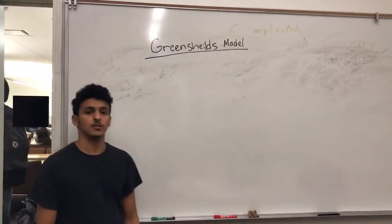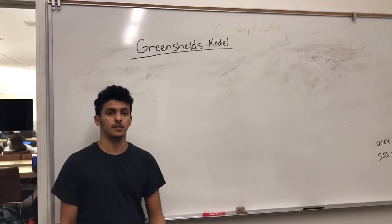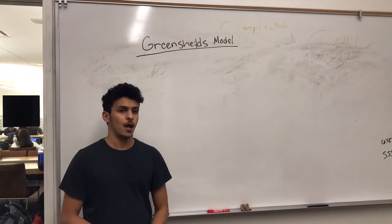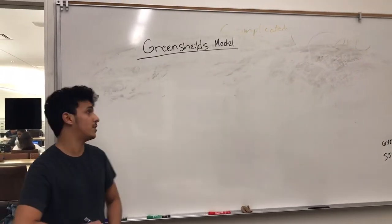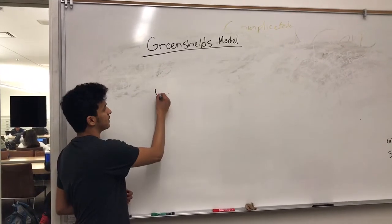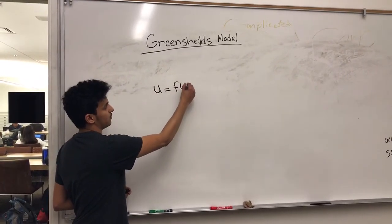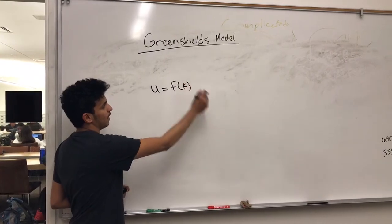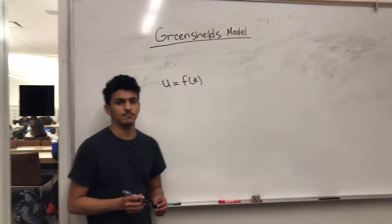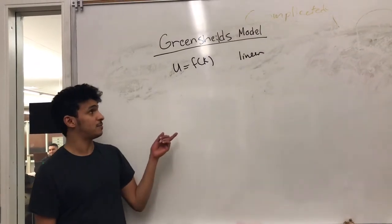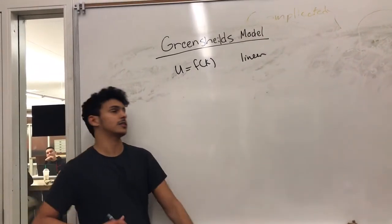where it's a shortcut for finding speed, density, and the flow rate relationship. And that happens when the speed is equal to a function of density and it's linear. So when this relationship is linear, we can use a shortcut.